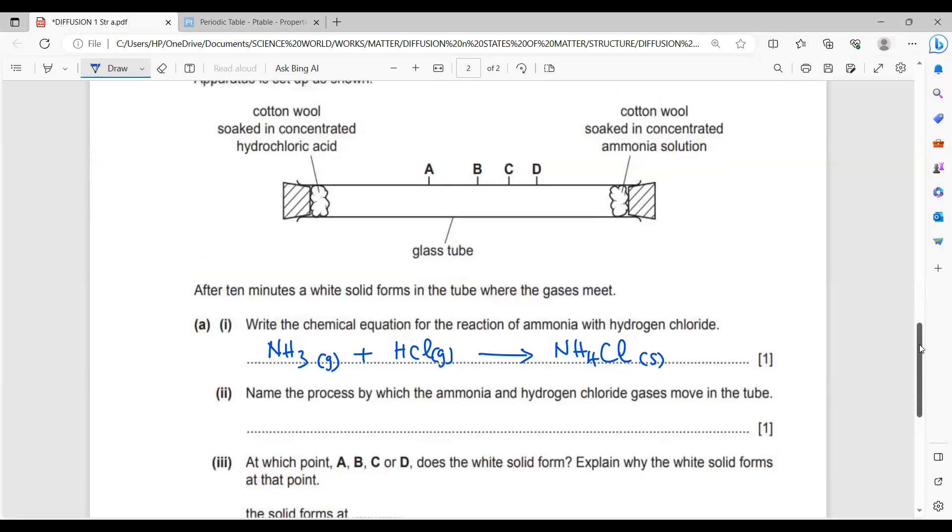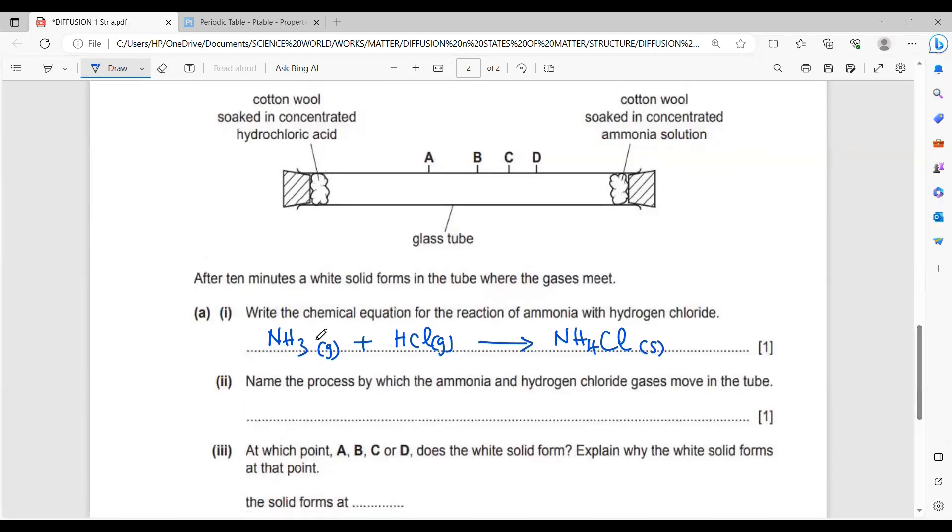Part A: Write the chemical equation for the reaction of ammonia with hydrogen chloride. So what are the two reactants here? We have ammonia and hydrogen chloride. So you have NH3 gas plus HCl gas gives you the product ammonium chloride, NH4Cl, and that's the white solid there. Let's check if the equation is balanced. One nitrogen, one nitrogen. Four hydrogen atoms here, four as well. One chlorine atom on both sides.